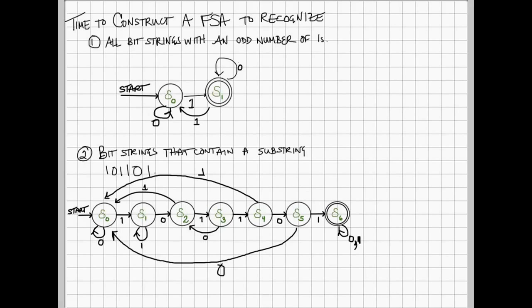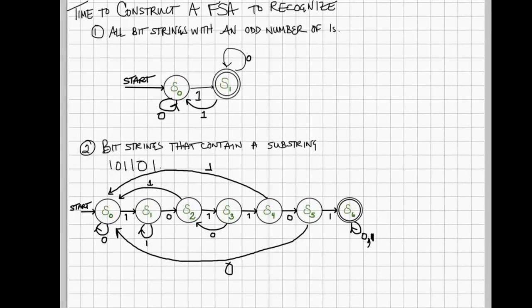this is the finite state automata that I got to identify the bit string 1, 0, 1, 1, 0, 1.